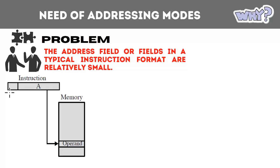In an instruction we have one portion called the opcode, which determines the kind of operation to be performed — for example, ADD for addition, SUBTRACT for subtraction, MULT for multiplication, and so on. After the opcode we have fields to identify the operands, which can be in processor registers, in RAM, or in virtual memory.